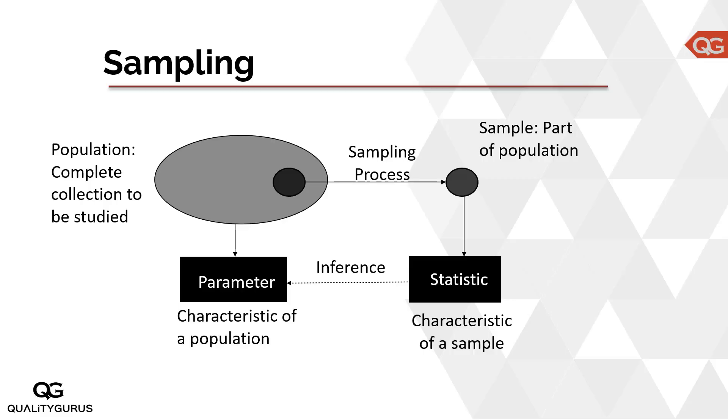Let's start this topic of acceptance sampling with a basic understanding of sampling. There are two things: population and sample. Population is the bigger thing. In the previous example, there were 1000 items and out of that we selected 80 items randomly and tested them. Those 1000 items were the population — the whole lot — and the small piece we selected was the sample.